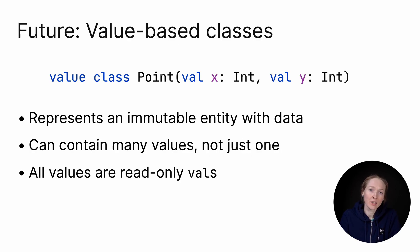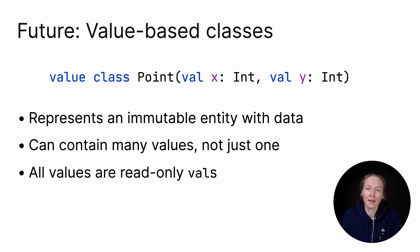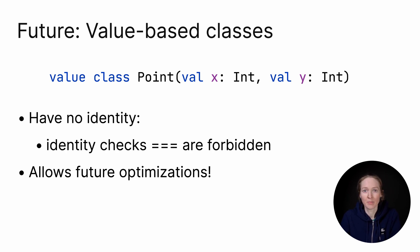If you want to learn about stable features in Kotlin 1.5 release, check the video about inline classes first. The idea of a value class is to represent an immutable entity with data. It can contain many values, not just one, but all of them should be read-only. Mutable vars aren't allowed. This syntax with two properties doesn't work yet, but it's planned to be supported in the future. Value class is primarily a data holder without identity – completely defined by the data stored inside. Identity checks are even forbidden for them, and that allows major future optimizations.